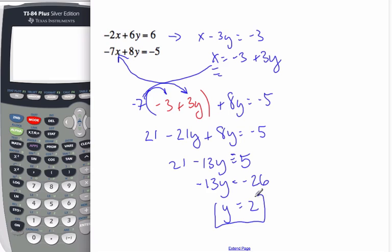Now there's y. What do I do with x to find x? So we need to put this y equals 2 back into either one of those first equations. And we'll do the first one because the numbers are nicer. 2 and 6 are nicer to use than 7 and 8.